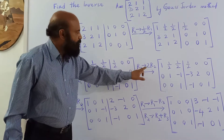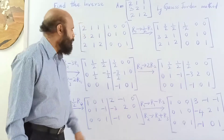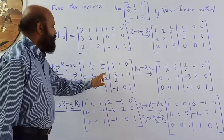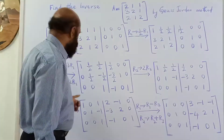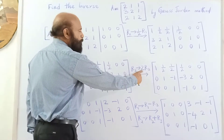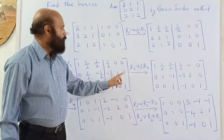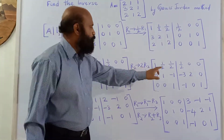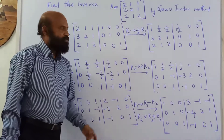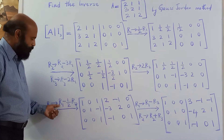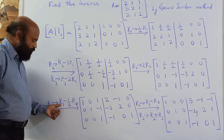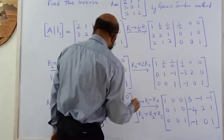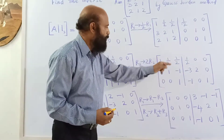Next, multiply all elements of the second row by 2 so that the (2,2) position becomes 1 — the fractions cancel to give 1 — and the (2,3) entry becomes −1. The third row remains unchanged. Apply the same transformation to the right side: multiply row 2 of the identity side by 2, giving [−3, 2, 0], while rows 1 and 3 are unchanged. Then subtract row 2 (multiplied by 1/2) from row 1 to make the (1,2) element zero.